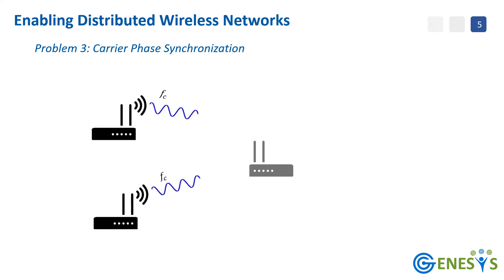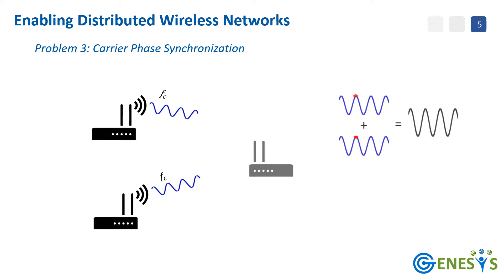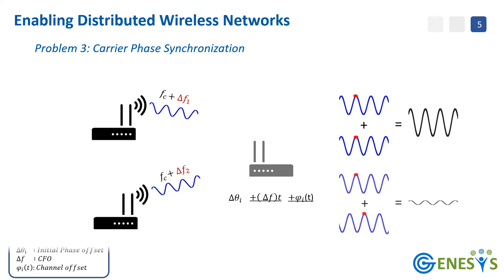And lastly, carrier phase synchronization should enable constructive superposition of signals from multiple transmitters by eliminating phase offsets resulting from initial phase difference, CFO, and phase induced by propagation of the signal.